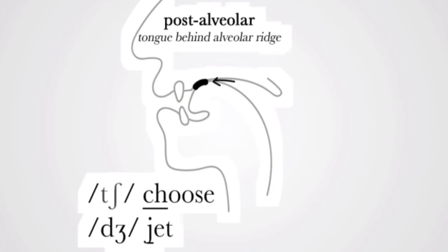The second stage is the release stage. The air that is blocked is released slowly — not suddenly — into the atmosphere. The sounds are ch and j.